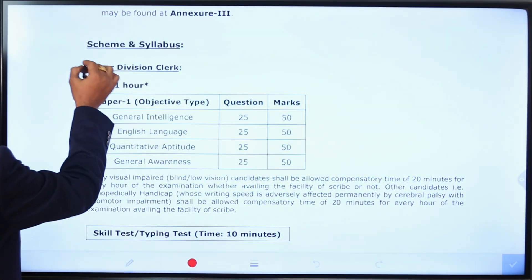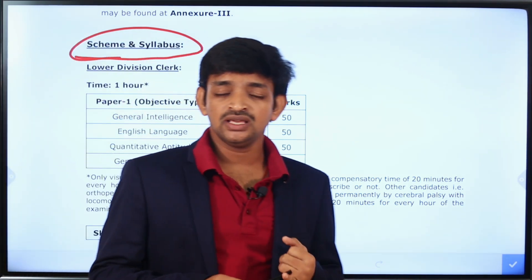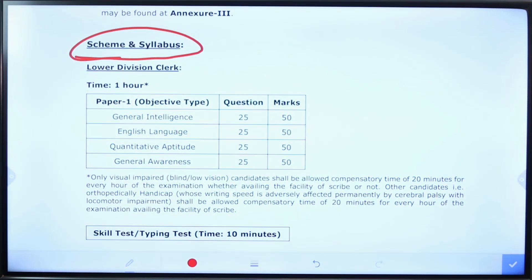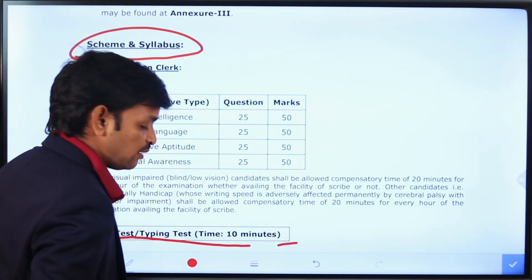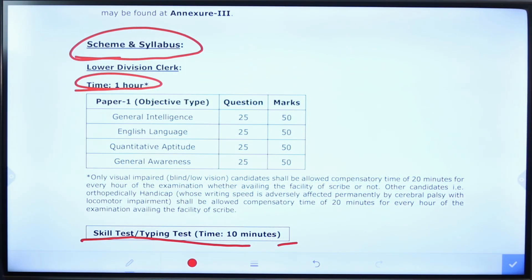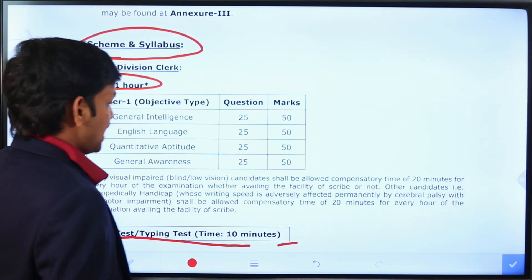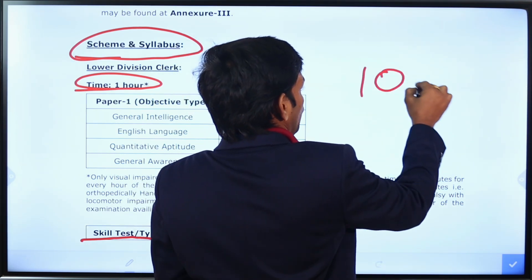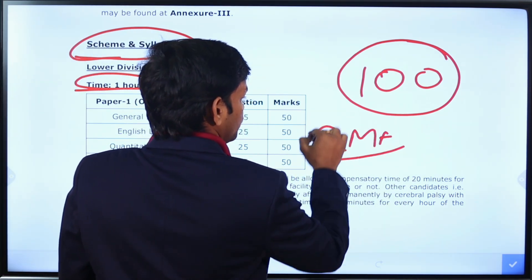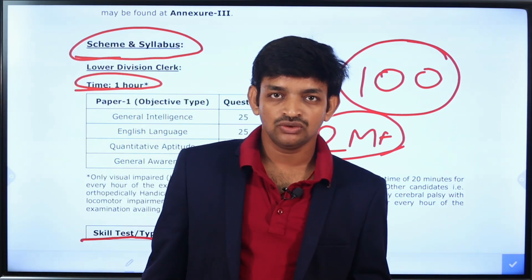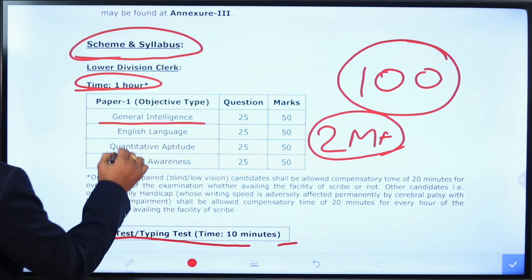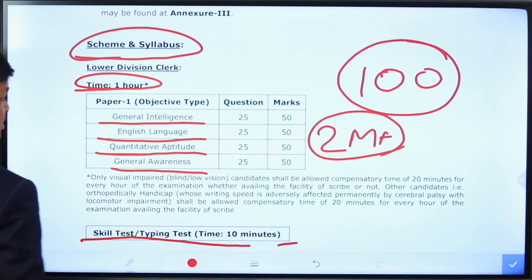The selection process is in two stages. Stage 1 is a computer-based exam conducted online, followed by a typing skill test. The written exam is 60 minutes long with 100 questions and a total of 200 marks. The exam has 4 parts: General Intelligence, English Language, Quantitative Aptitude, and General Awareness. Each part has 25 questions worth 50 marks.